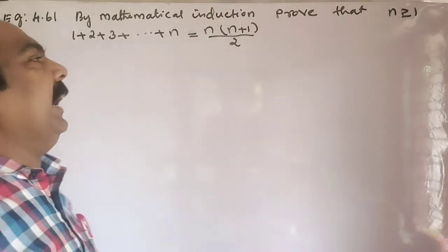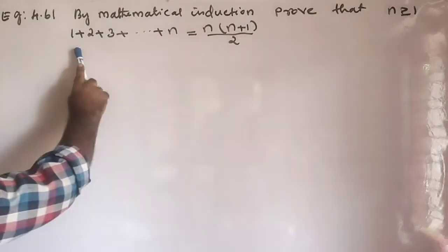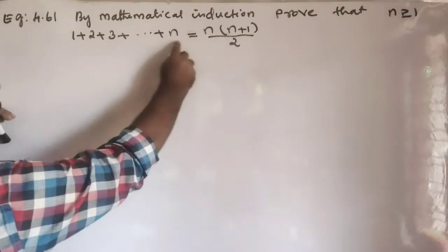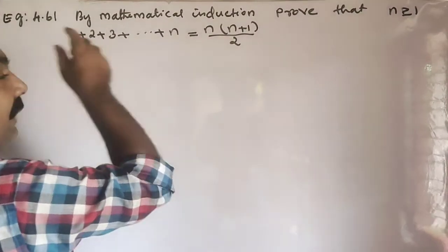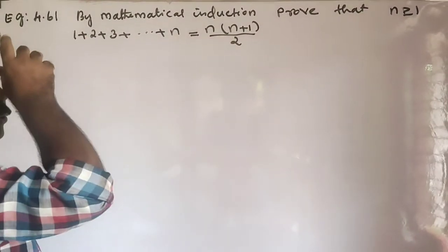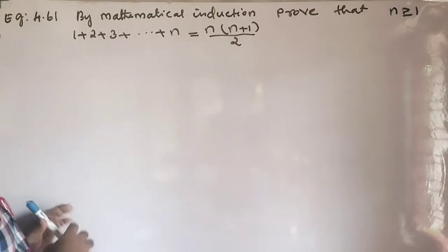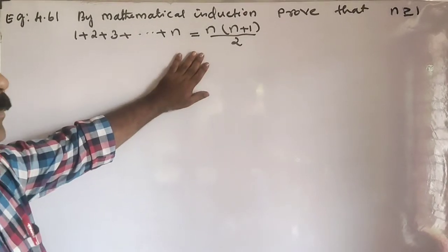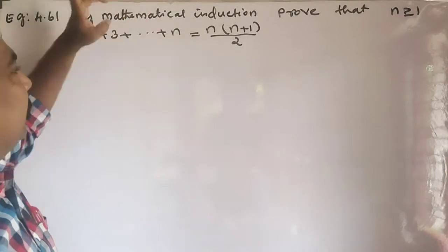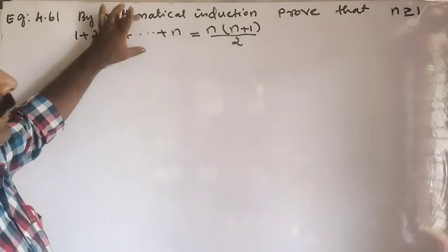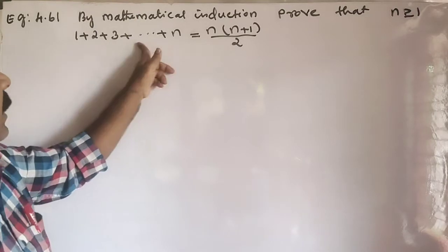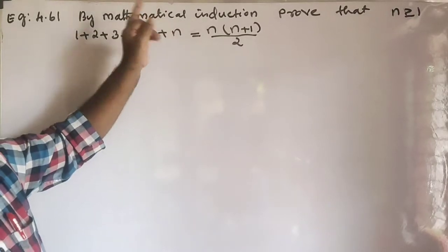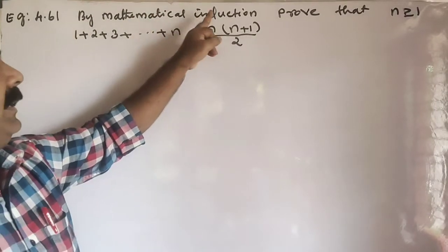We need to prove that 1 plus 2 plus 3 etc. up to n is equal to n(n+1)/2. If you want to know an example, take 2 by 4. If you want to verify this formula is correct, this is the form.